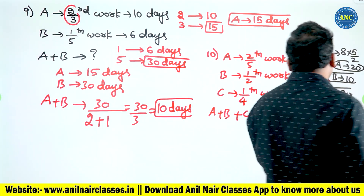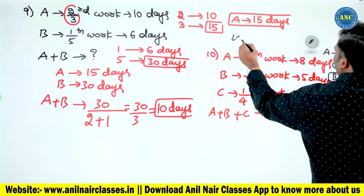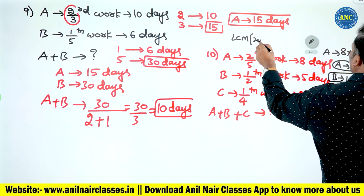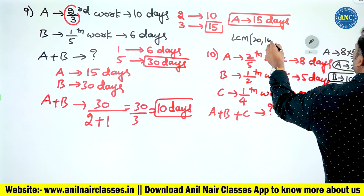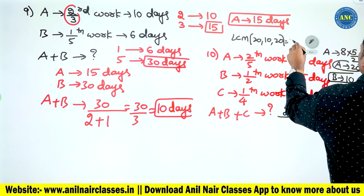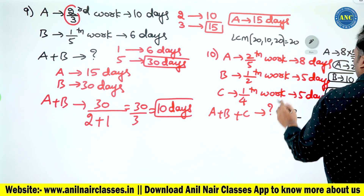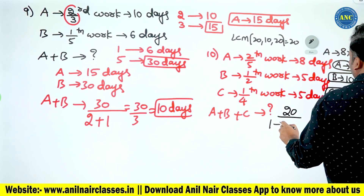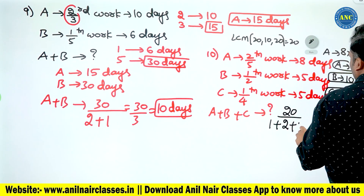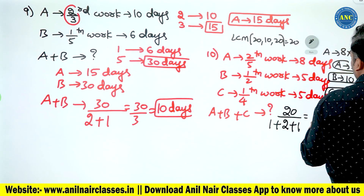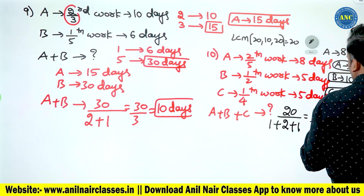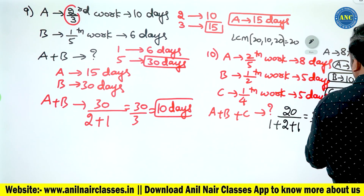LCM of 20, 10, and 20 is 20. Units per day: A = one, B = two, C = one. Total = one plus two plus one = four units per day. Twenty divided by four equals five days.